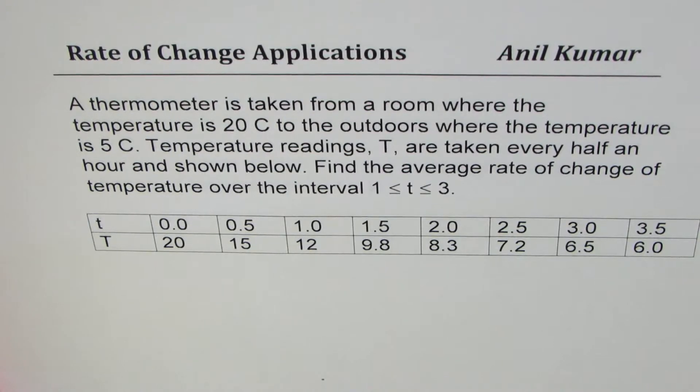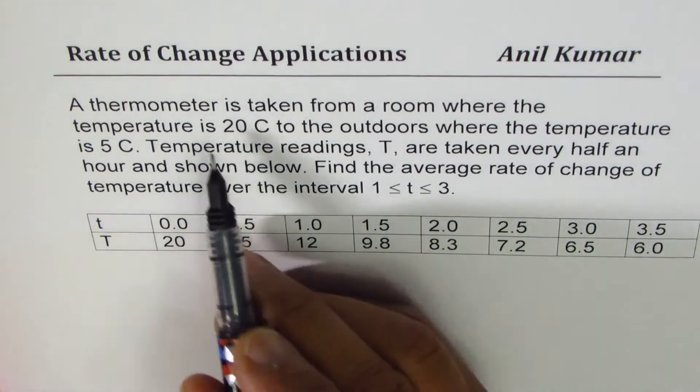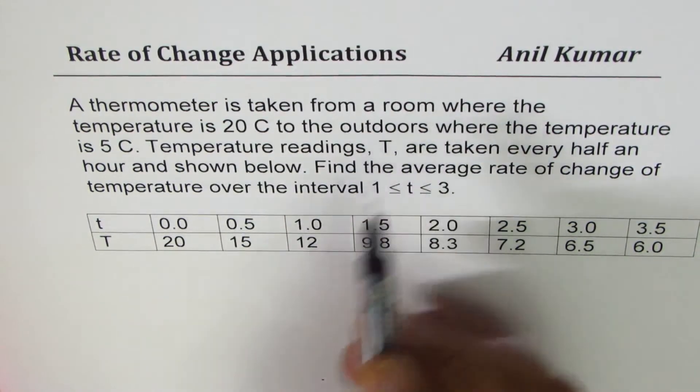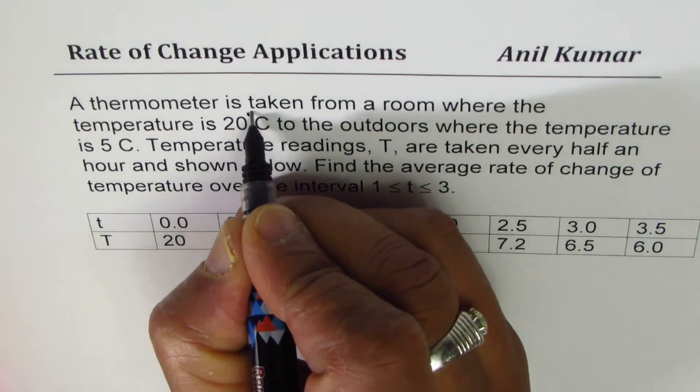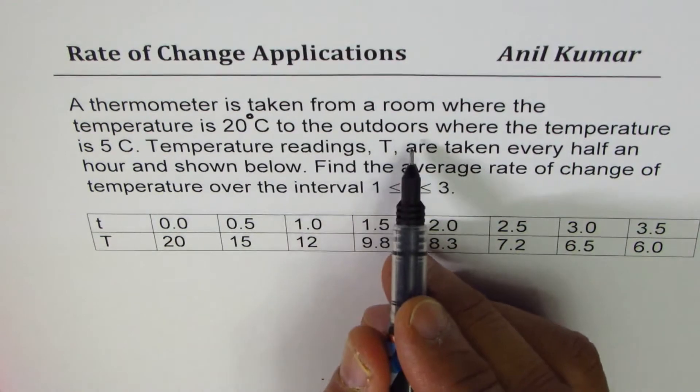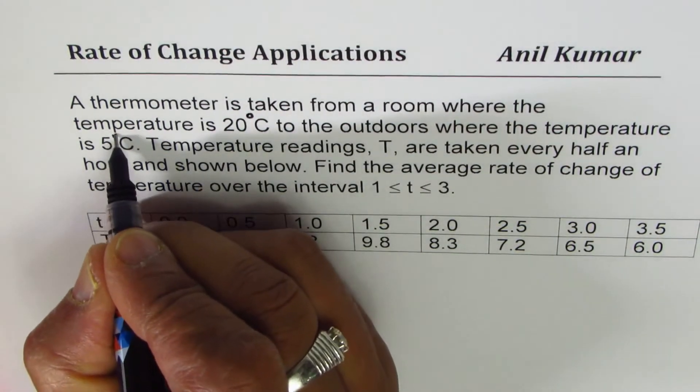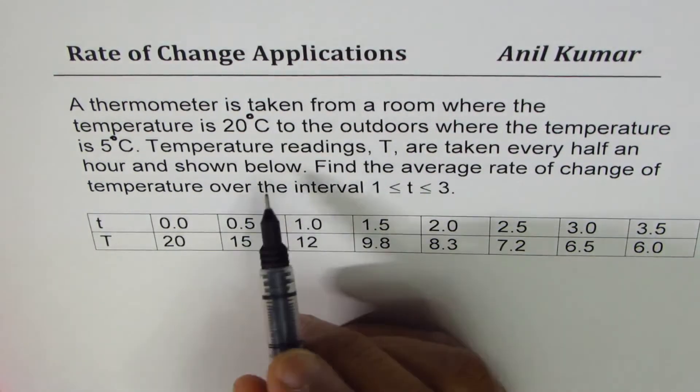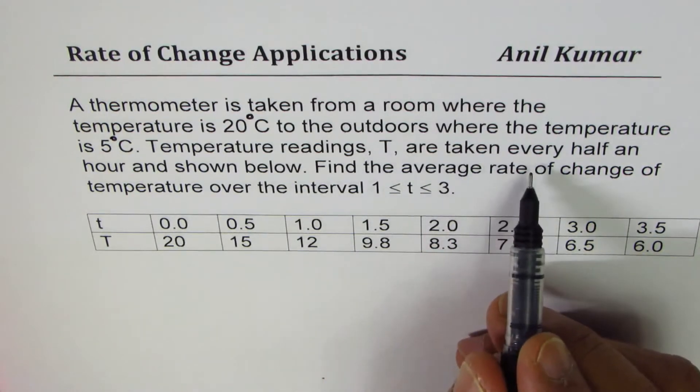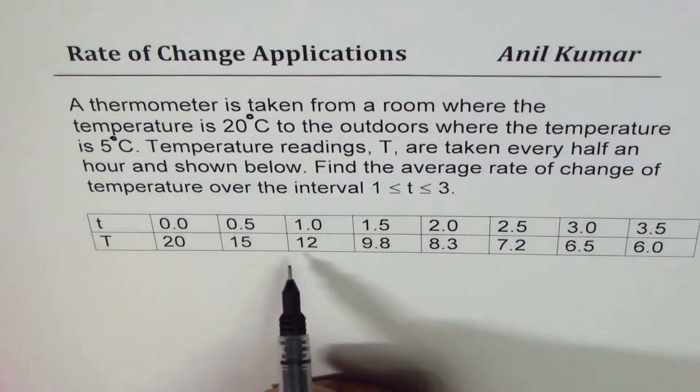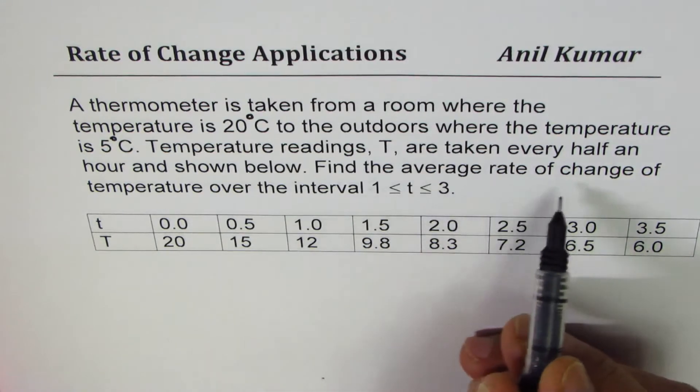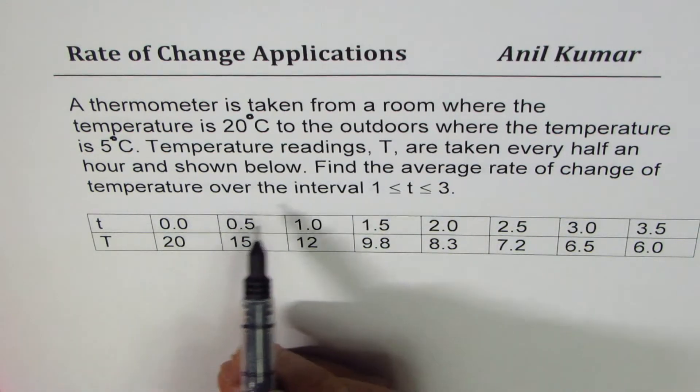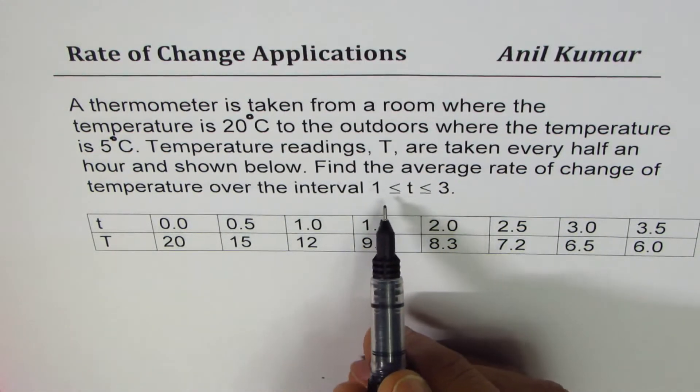The question here is: a thermometer is taken from a room where the temperature is 20 degrees centigrade to the outdoors where the temperature is 5 degrees centigrade. Temperature readings, capital T, are taken every half an hour and shown below. Find the average rate of change of temperature over the interval 1 to 3.